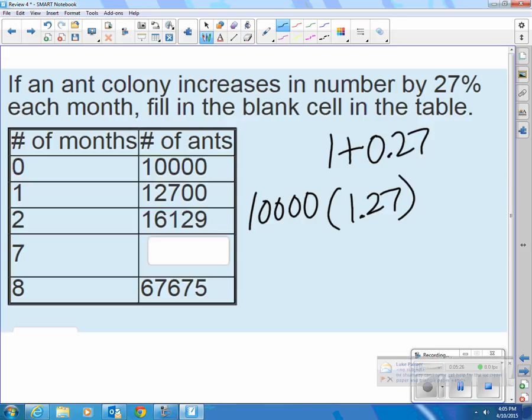But let's go ahead and multiply that. Or raise that to the 7th power. So that would be multiplying by that 7 times. That number is 53,288 if I round it to the nearest whole ant. Try that on your calculator, just to make sure you're using the calculator right.